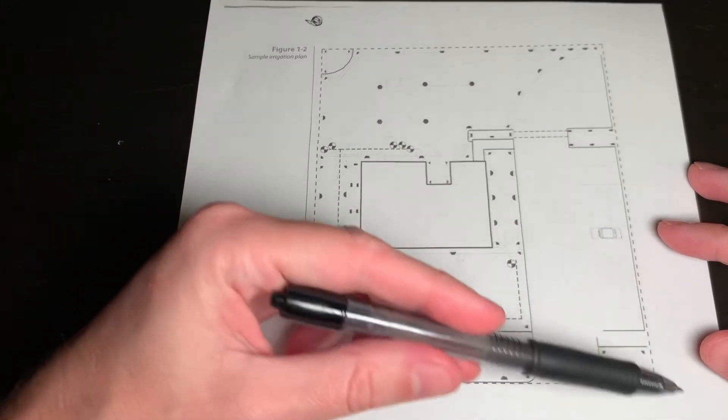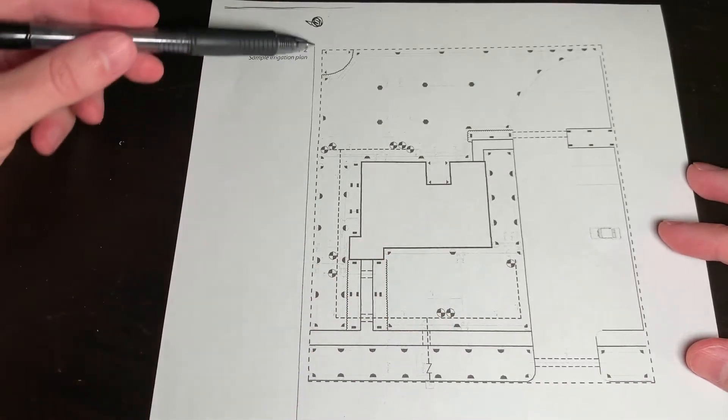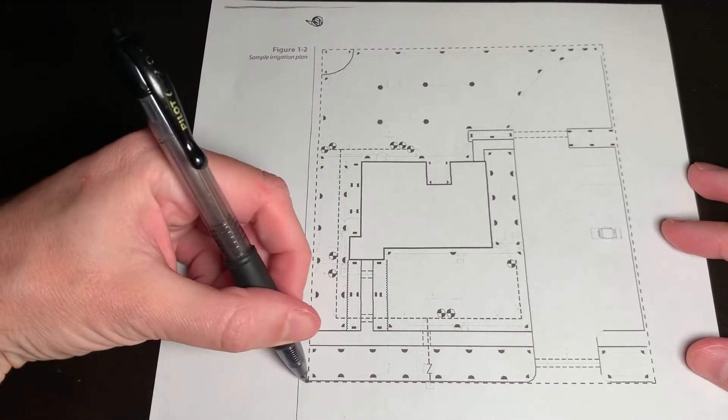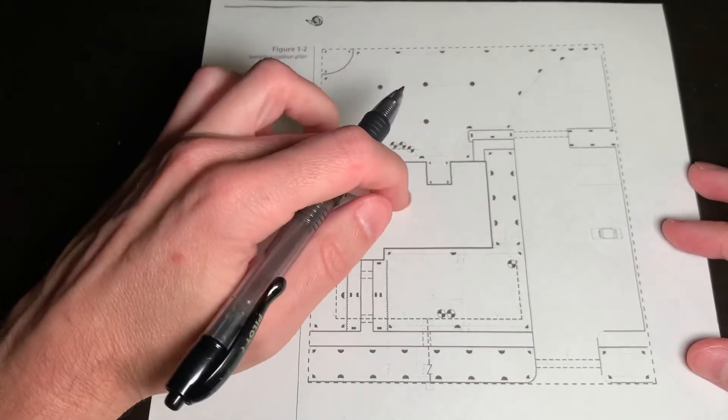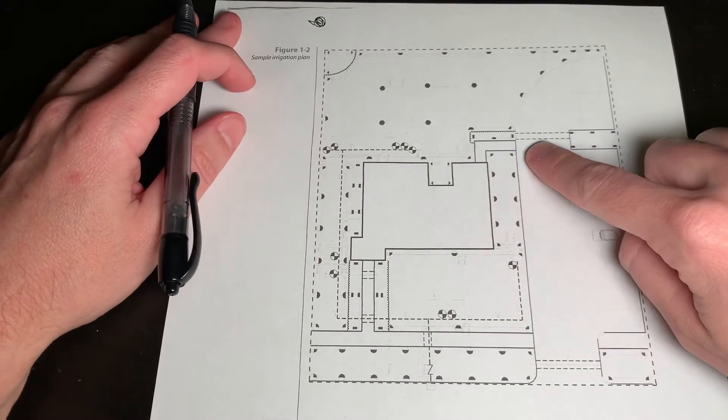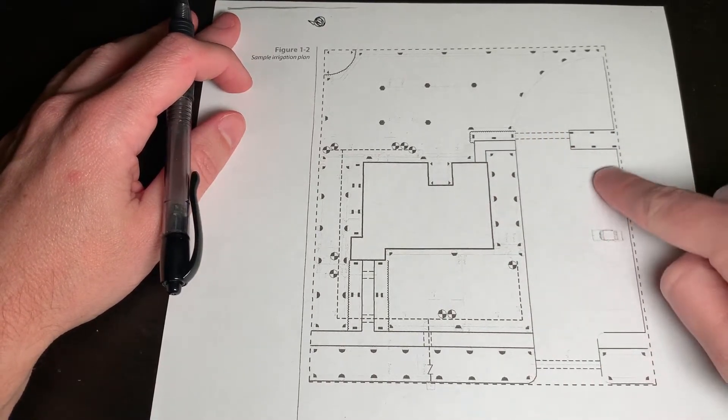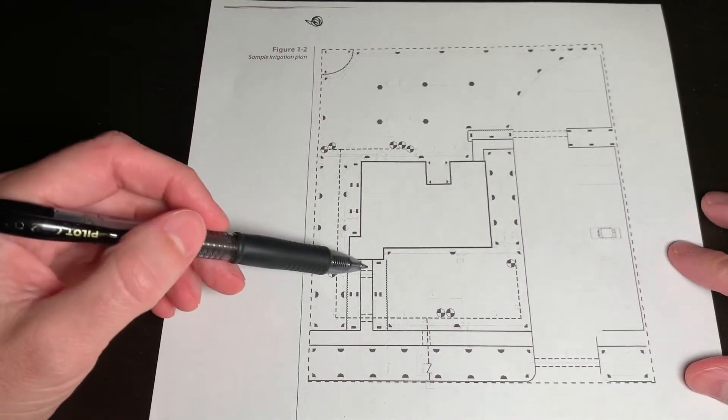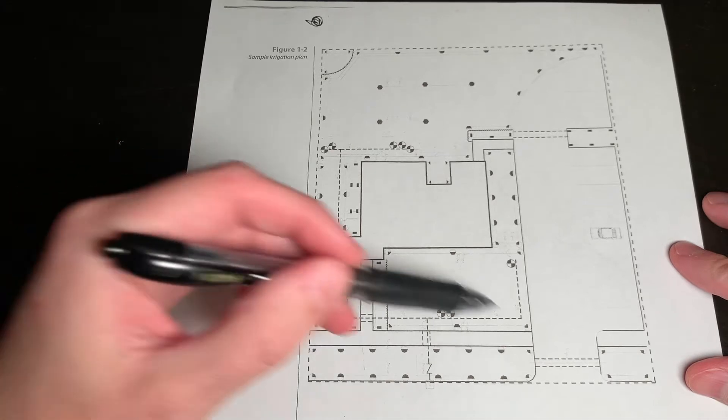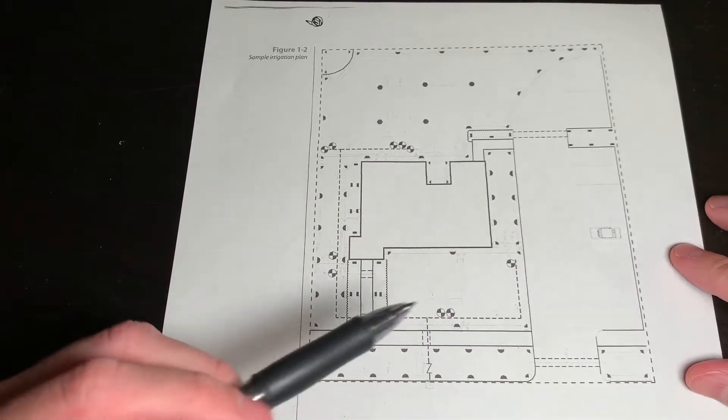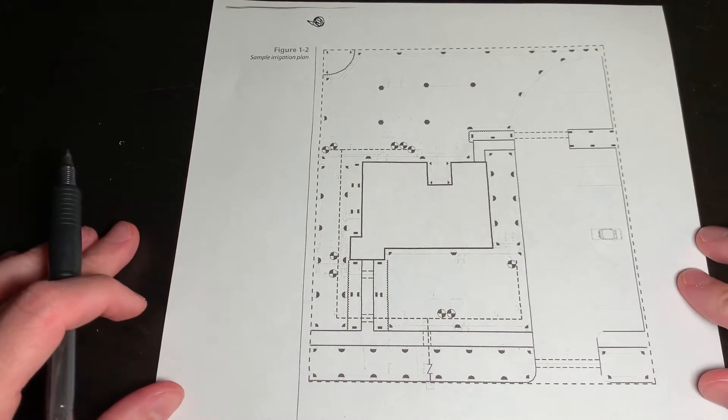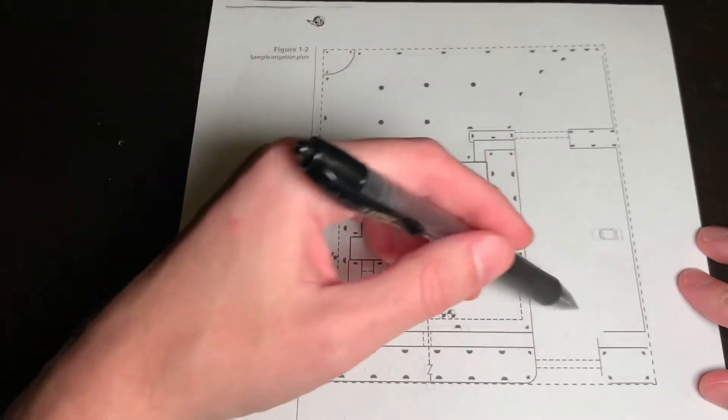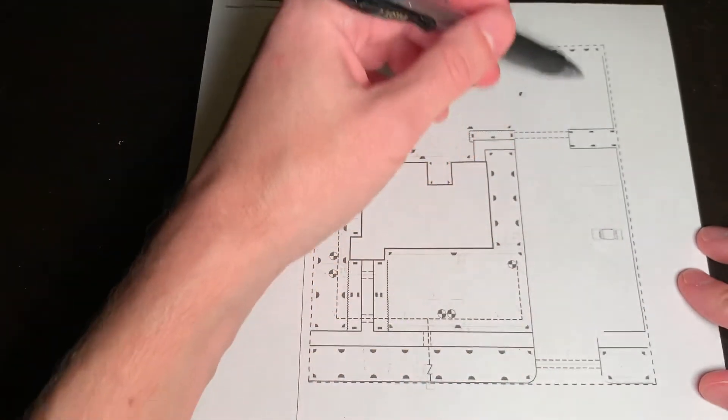So one thing you're always looking for is the property line. And so in this plan, it's in dash lines. And then you're looking for any buildings or any hardscape. And in this case, we have what looks like a parking lot here, and then a building of some sort. And then clearly we have walkways. And then presumably this is the street. So we have a building, we have landscaped area, and we have a parking area and we have some landscaped areas over here.